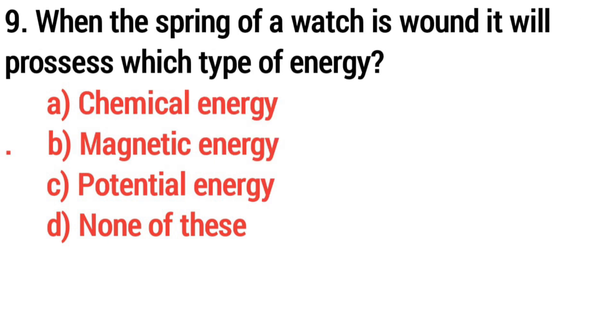Question 9. When the spring of a watch is wound, it will process which type of energy? Answer, Option A, Chemical energy.